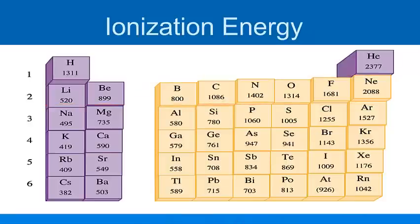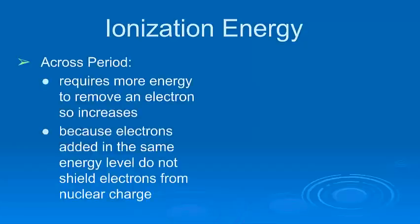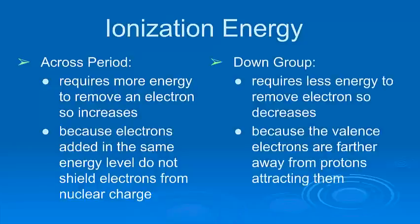As I go across a period, it takes more energy to take one of those electrons away. So, why is this? Well, if we go across a period, it takes more energy to remove an electron. So, the ionization energy goes up, the amount of energy required to remove an electron. The reason is, electrons are added in the same energy level, and the nucleus gets more positive and pulls them in.